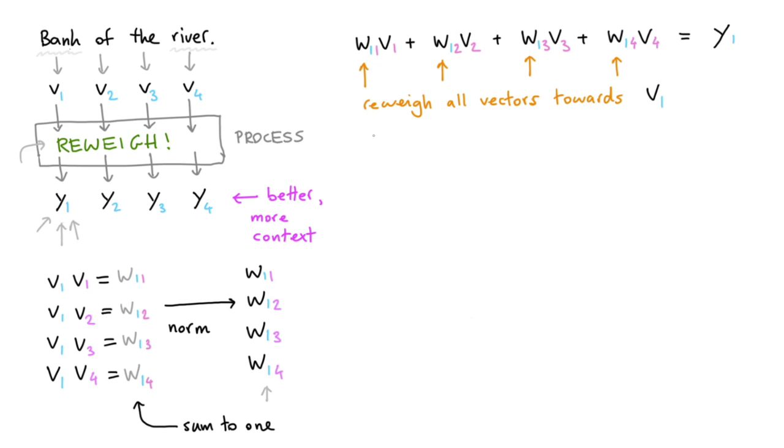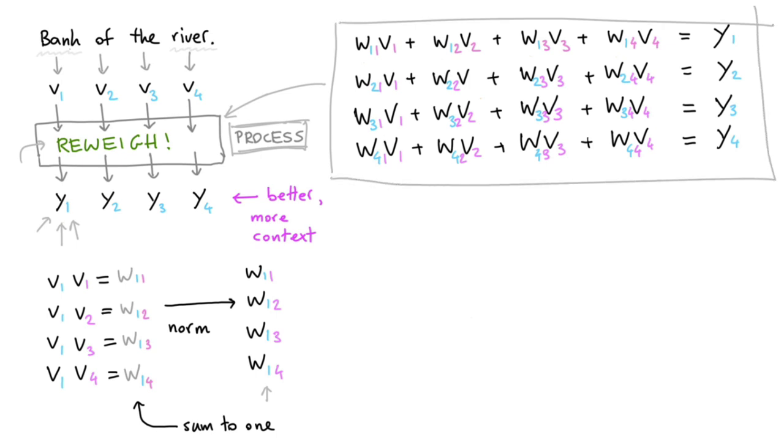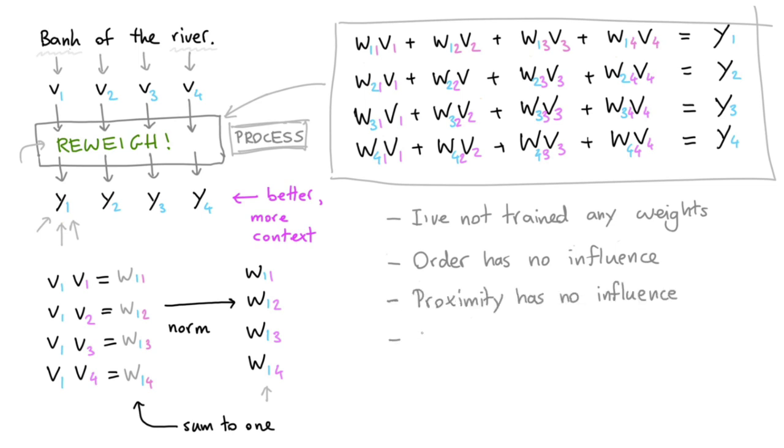So what I'll now do is I'll just add more formulas here, such that we have everything. So I've written down all the maths, and I hope it's clear that this process over here, all the re-weighing that's happening there, that is done here. This is all the math. And there's a few things happening here that are non-standard, so to say. Notice how I've not trained any weights. Order has no influence. And proximity has no influence. And this approach is shape-independent.